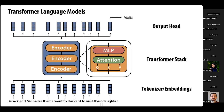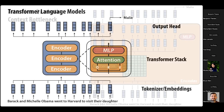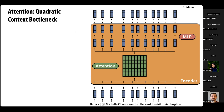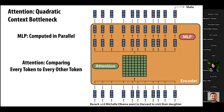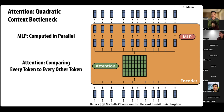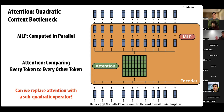Let's dive into the transformer encoder block and find where the quadratic bottleneck comes from. It's really the attention mechanism, which compares every token in the input sentence to every other token. Meanwhile, the other parts like the MLPs are computed in parallel for each token. So for long sequences, attention is really the bottleneck. The research question is: can we replace attention with a subquadratic operator?